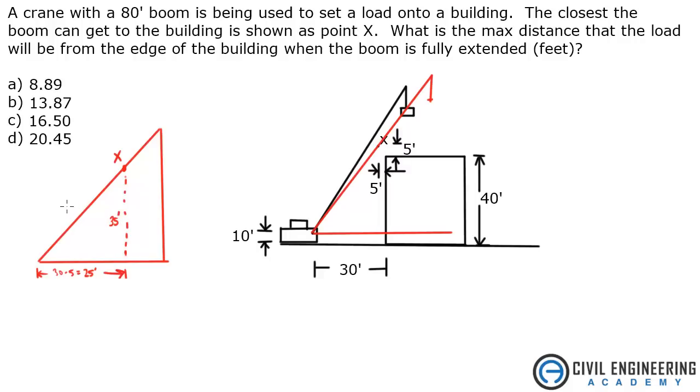So now we just need to solve for A, which is from this point X. We just use Pythagorean Theorem. 25 squared plus 35 squared equals A squared. A equals, I get 43.01.